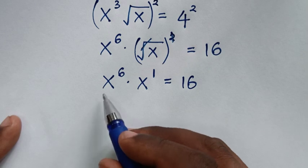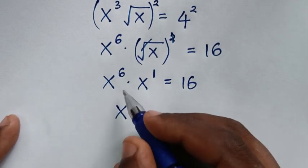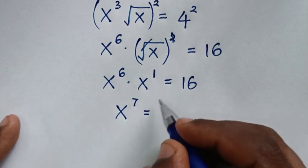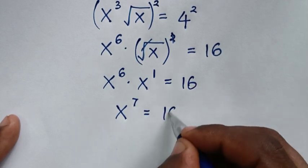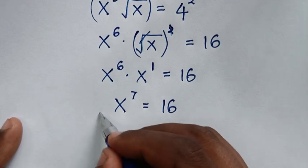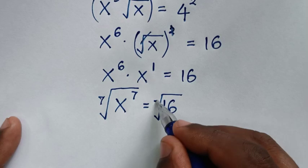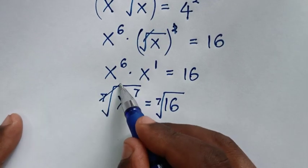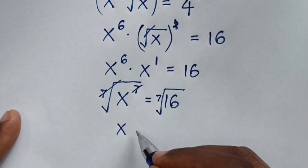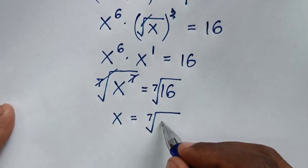Now x power of 6 times x power of 1 is x power of 6 plus 1, which is x power of 7, is equal to 16. Then to remove this power of 7 we apply the 7th root on both sides, so this 7th root cancels the power of 7, giving x is equal to the 7th root of 16.